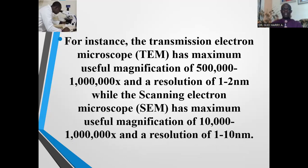The electron microscope possesses higher magnifications and resolutions. For instance, the transmission electron microscope has a maximum useful magnification of times 500,000 to 1 million and a resolution of 1 to 2 nanometers. The scanning electron microscope has a maximum useful magnification of times 10,000 to times 1 million and a resolution of 1 to 10 nanometers.